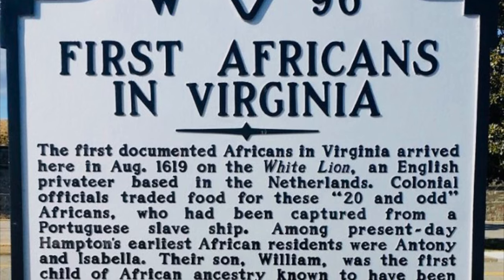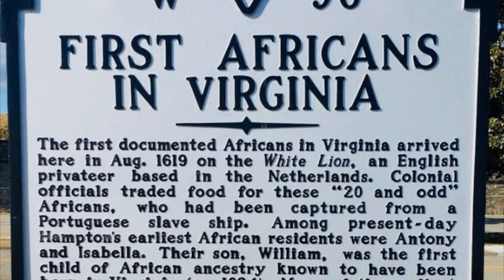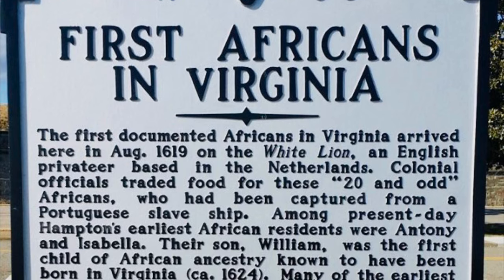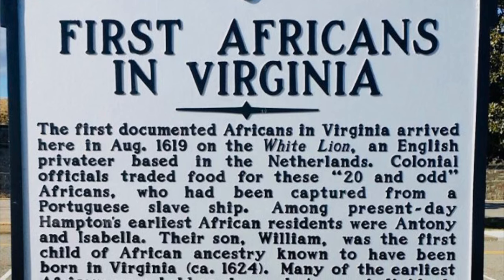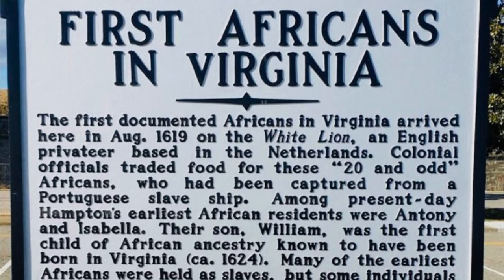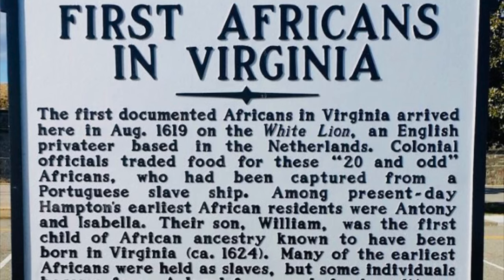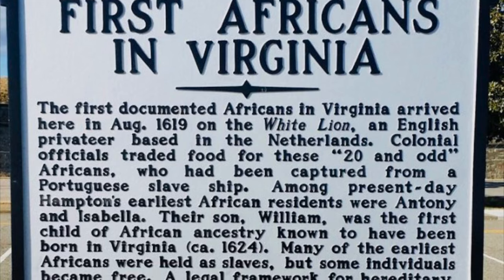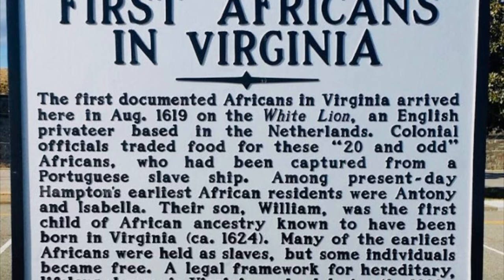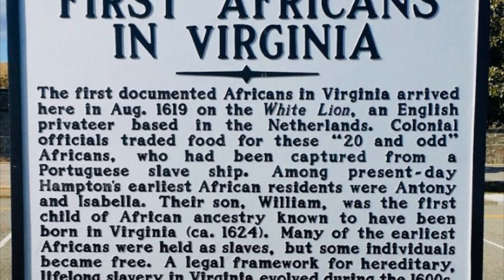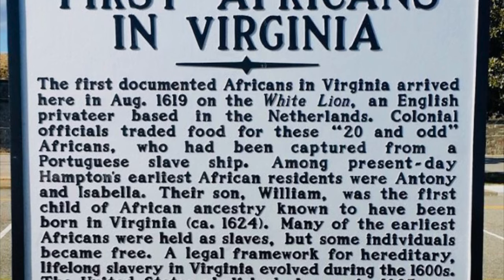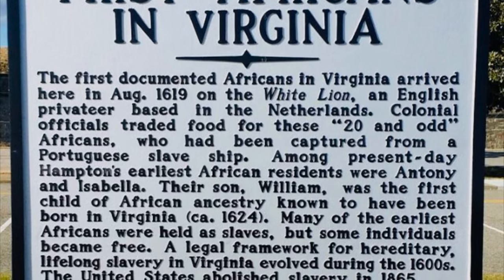In 1662, a Virginia court ruled that all children born to enslaved mothers were the property of their mother's owner. As cash crops such as sugar, tobacco, and cotton began to rise, so did slavery. Slavery became a booming and lucrative business.